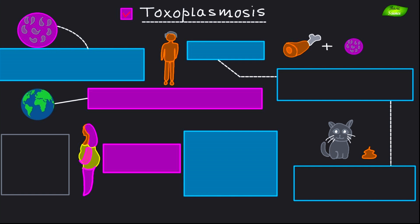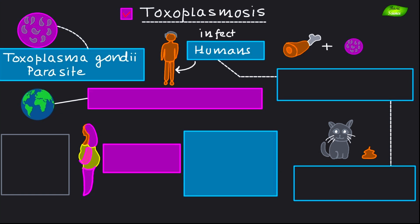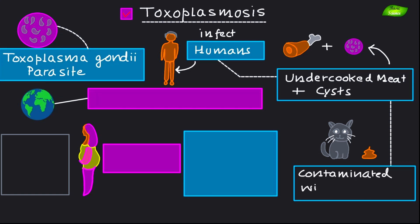Now let's move on to toxoplasmosis, which is associated with cats. It is caused by the Toxoplasma gondii parasite, which can infect humans through the consumption of undercooked meat containing the cyst, or through contact with contaminated cat feces — since cat feces can contain cysts of this parasite.